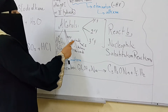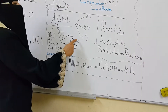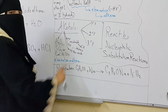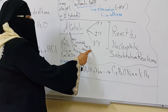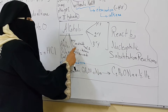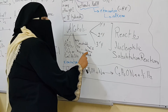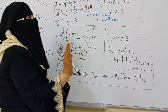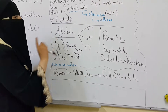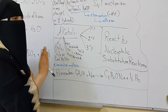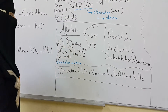Primary alcohols can be oxidized to aldehydes, and aldehydes can be oxidized further to carboxylic acids. Secondary alcohols are oxidized to ketones, which cannot be oxidized further. Tertiary alcohols do not undergo any oxidation reactions.